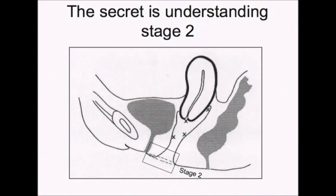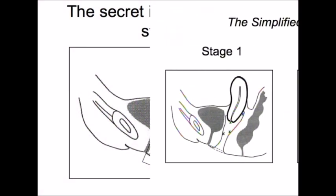Remember, if the anterior vaginal wall, posterior vaginal wall, or any of the points are stage 4, they are all stage 4 because by definition that is complete procidentia.